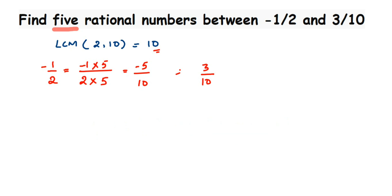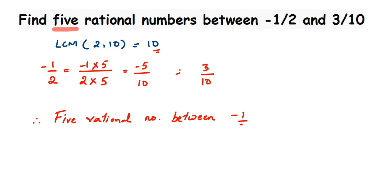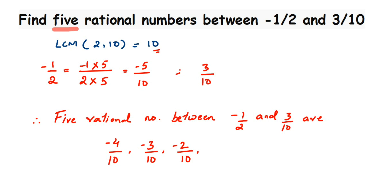Therefore, 5 rational numbers between -1/2 and 3/10 are (we write them with denominator 10): -4/10, -3/10, -2/10, 0/10 (which is simply 0), and 1/10. You can pick any 5 numbers from the available integers between -5 and 3.